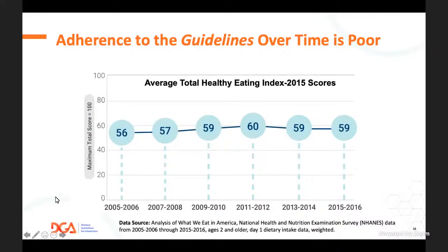Despite putting out these guidelines every five years, we're not seeing big improvements in the Healthy Eating Index score—a conglomerate score giving an idea of diet quality. All of us, nutrition professionals in particular, have to be asking what can we do to change people's dietary habits. This has to be everyone coming to the table—not only health professionals, but the food industry, the government, and everyone working together.